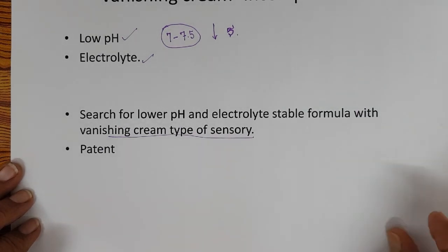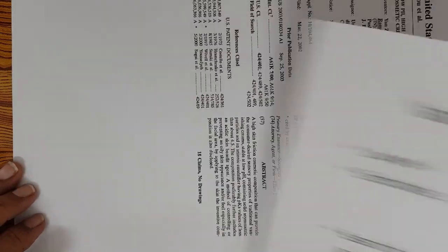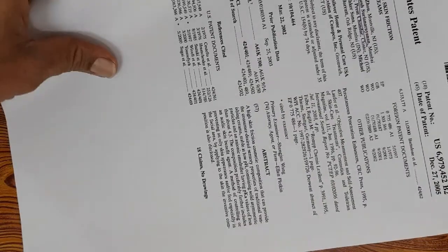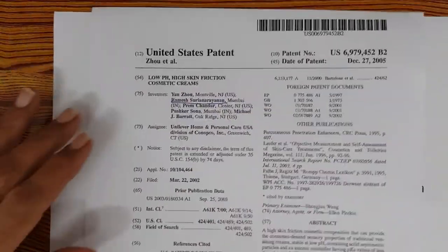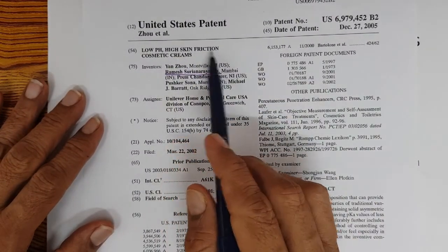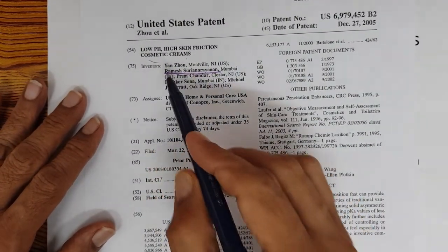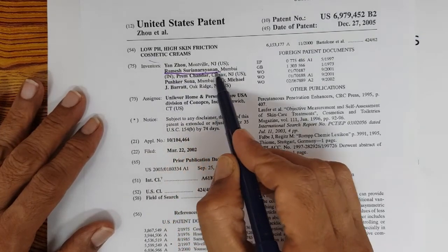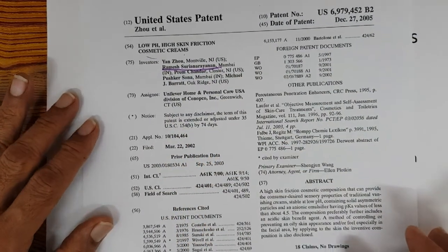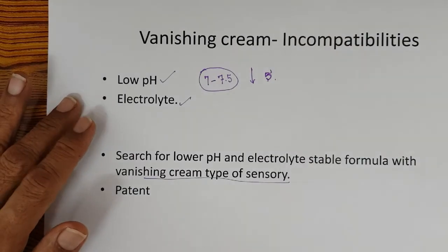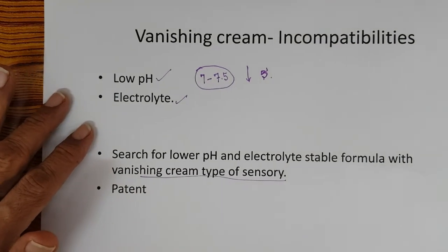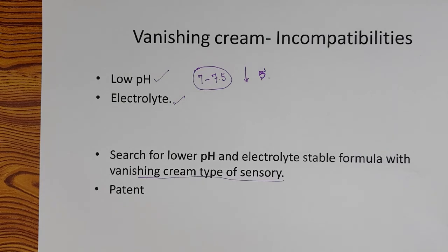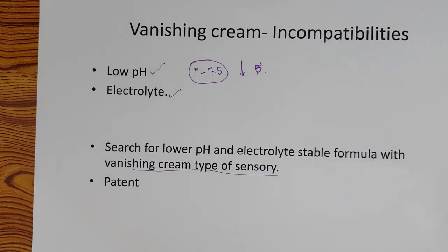Now the patent has been filed by Unilever. This is the patent: low pH high skin friction cosmetic creams. I am one of the authors for the patent. So this is the cream where you can use it with all actives but still retain the sensories of a vanishing cream. It doesn't have soap as an emulsifier.